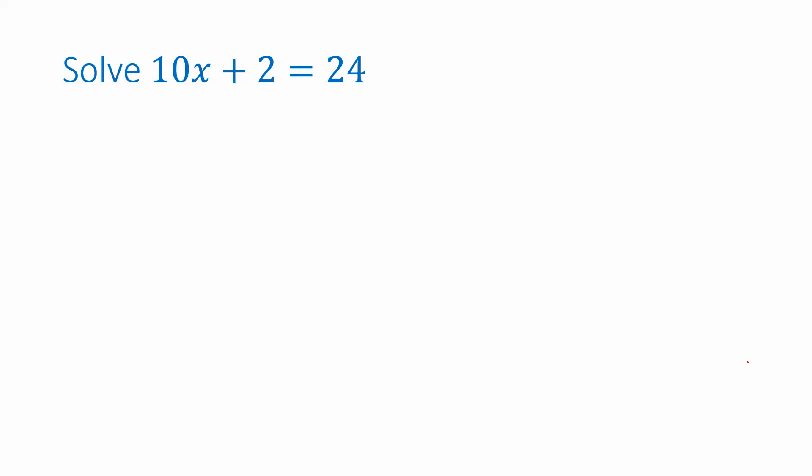So let's review a systematic way of doing this. We want to think about what is going on with x here. We're multiplying it by 10 and then adding 2. That's the order because of the order of operations — multiplication comes before addition. If I plugged in 3, 10 times 3 gives 30, then add 2 gives 32 — that's obviously not the right answer. So what we're going to try to do is isolate x.